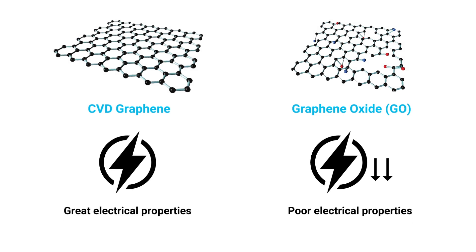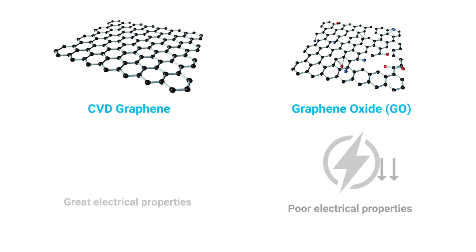CVD graphene generally has great electrical properties due to its high electrical conductivity and high electron mobility. Relative to CVD graphene, graphene oxide has lower electrical conductivity and lower electron mobility, meaning it has relatively poor electrical properties. These electrical properties, along with other differences, play directly into the applications where these materials are used.